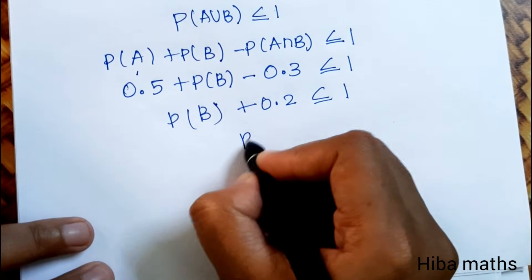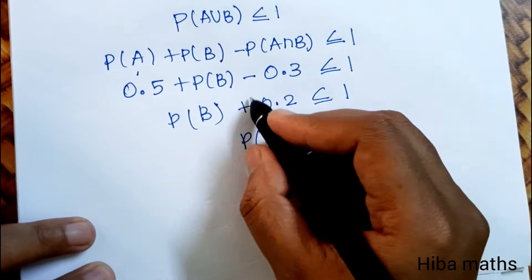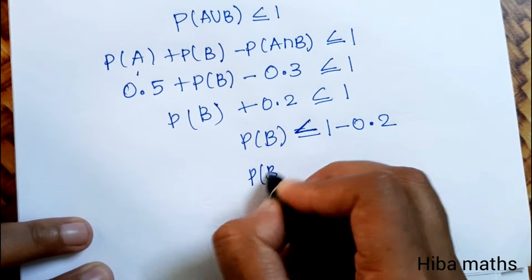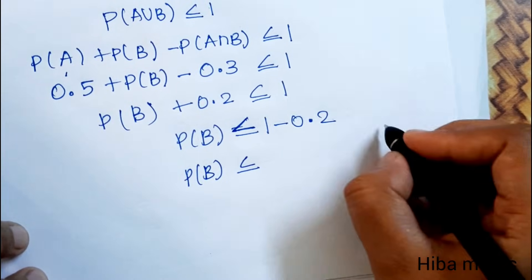0.5 minus 0.3 is 0.2, so P(B) is less than or equal to 1 minus 0.2. P(B) is less than or equal to... we'll do the calculation now.